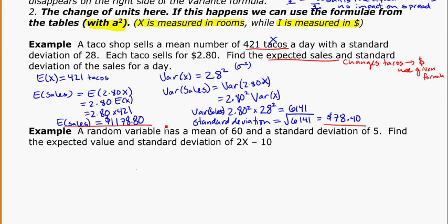One more example to look at. A random variable has a mean of 60 and a standard deviation of 5. Find the expected value and standard deviation of 2x minus 10. So this is just a very abstract problem. There's no context to it. We can just call a random variable x.